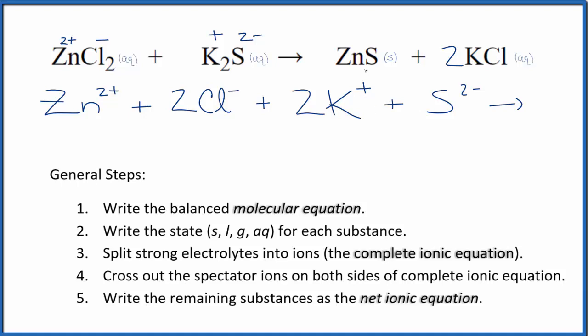For the products with net ionic equations, we don't split solids apart. This is a precipitate. We're not going to split it apart. So we just have ZnS in the products. And then we said positive and negative here. So two potassium ions, just like the reactants. And two chloride ions, just like the reactants. So this is the complete ionic equation.